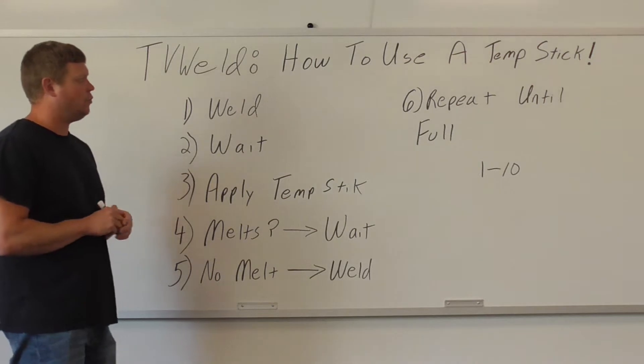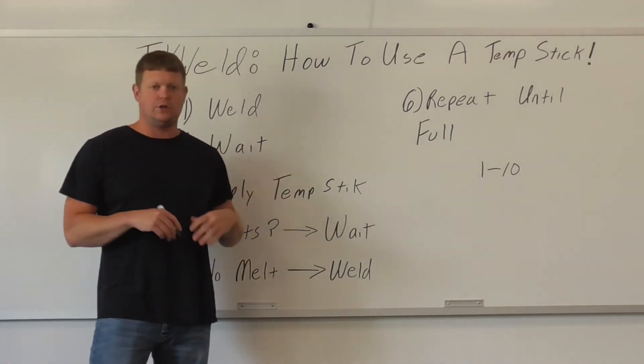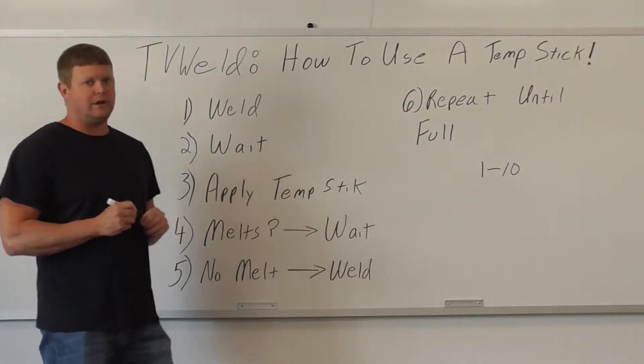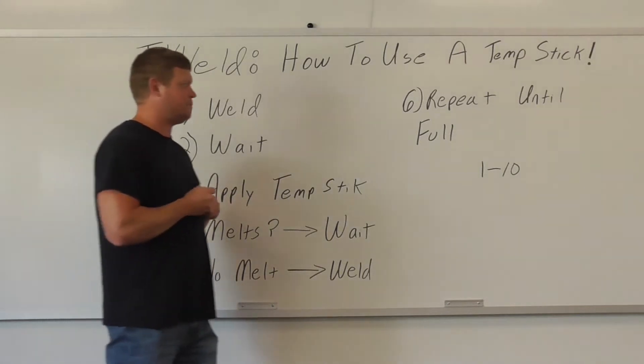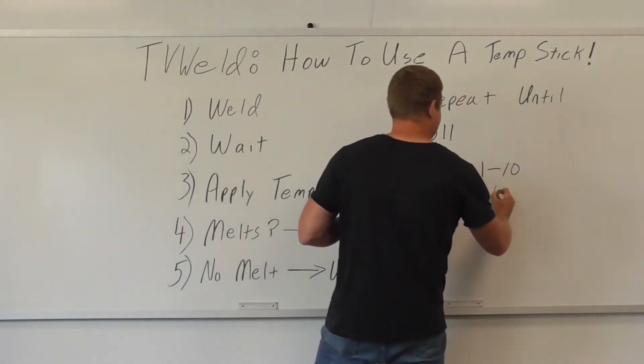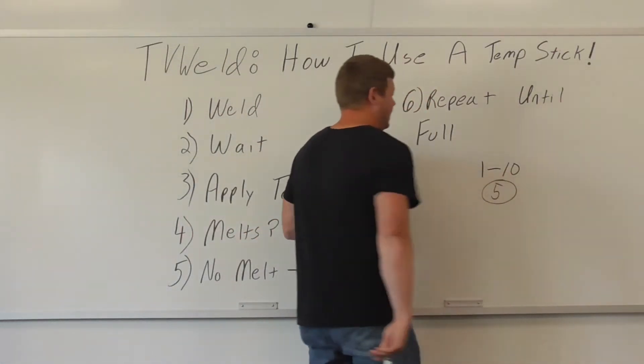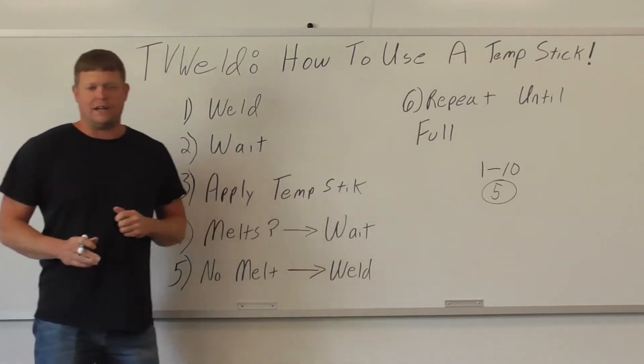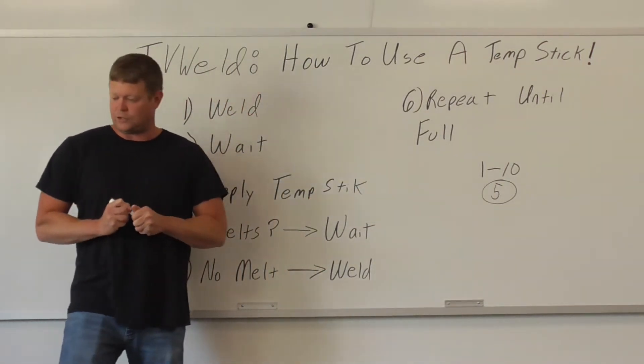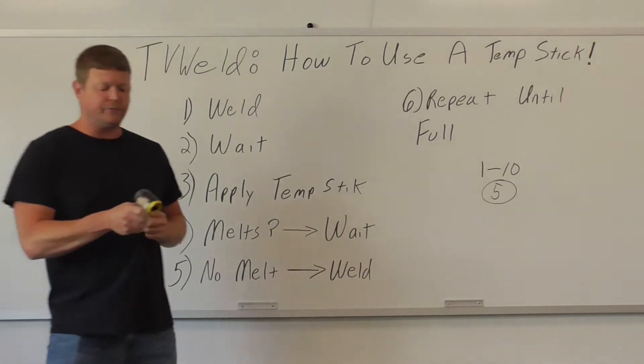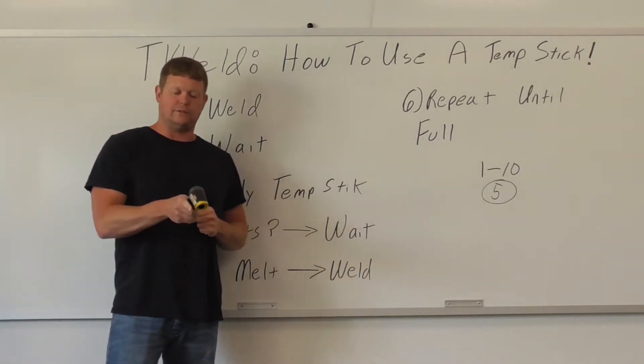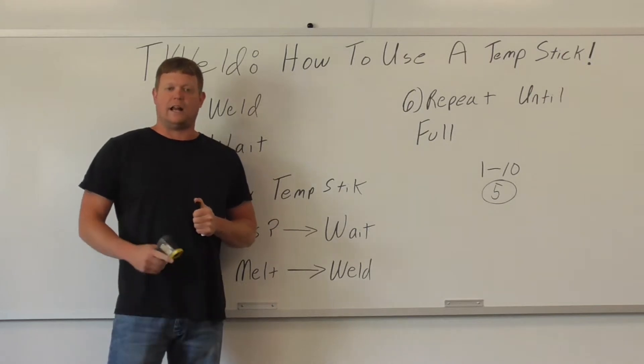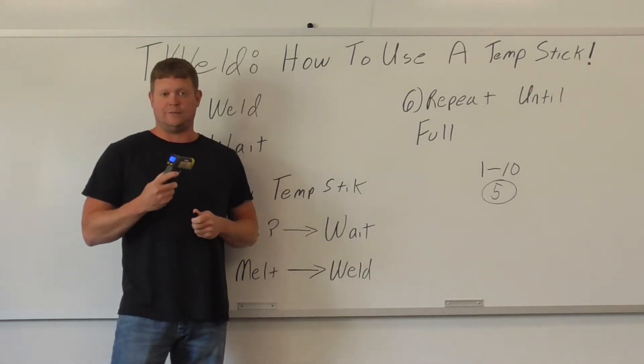Now on a scale of 1 to 10, 1 being not a big deal, 10 being a huge deal, I'm going to say if you don't know how to use a temp stick in the welding world, it's probably around a 5. And normally I would say a 9 or a 10, but because of digital thermometers, which I have one right here, you just pull the trigger, put it on there, 75.9. That gives you the temperature like that. And a lot of people are using these now and not using temp sticks.